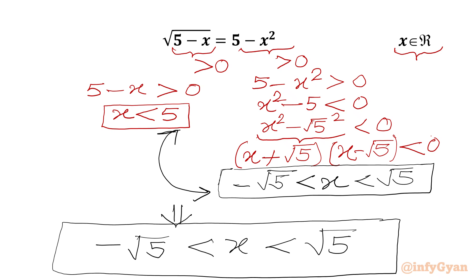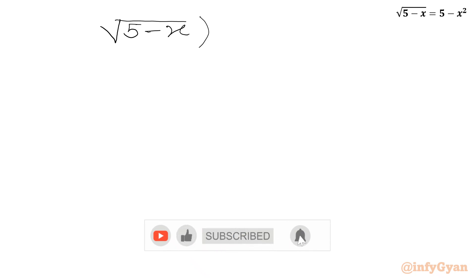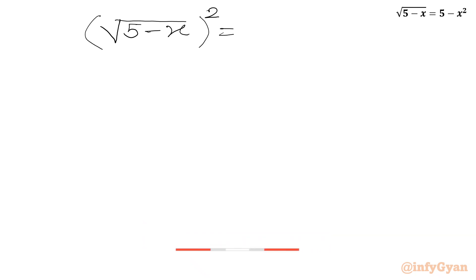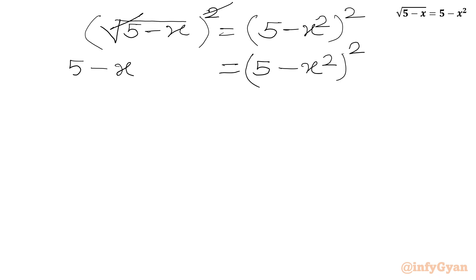Now we have to solve our equation. I will consider squaring both sides first. So √(5 − x) squared equals (5 − x²). We can cancel the square root with the square on the LHS, giving us 5 − x = (5 − x²)². Now we will subtract x² from both sides.